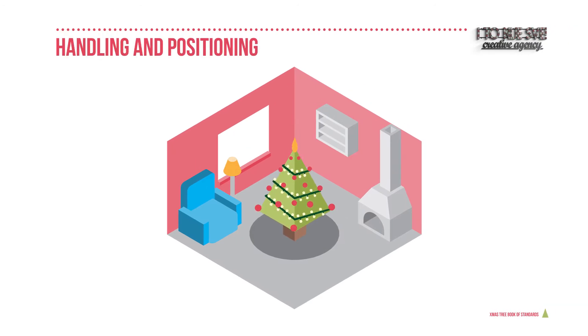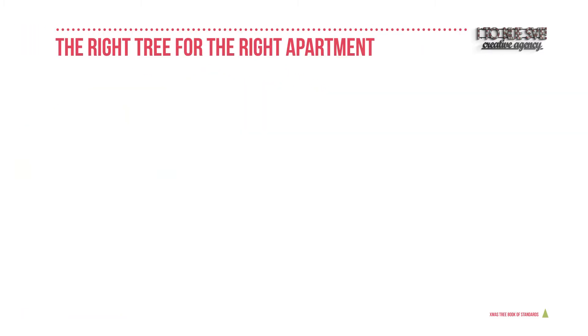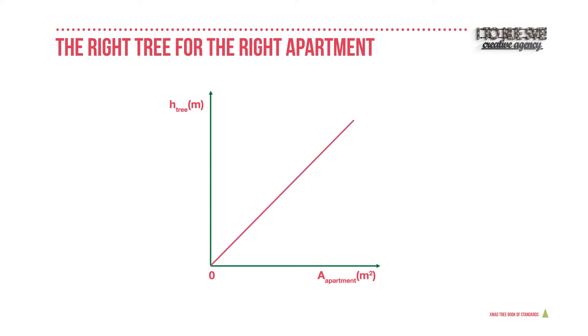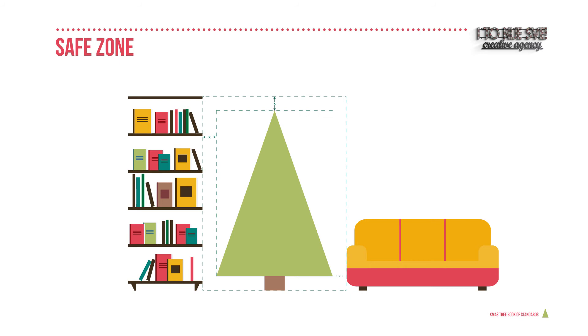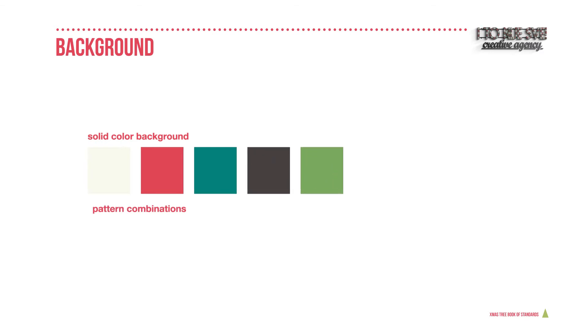When it comes to handling and positioning, place the Christmas tree in the room most used by family and friends, and keep it visible at all times. Only the right tree for the right apartment tells the true brand story. To keep your work from appearing arbitrary, please keep this diagram in mind. The safe zone is important to keep. Whenever possible, place the Christmas tree against a solid background — the colors can differ and patterns may occur.